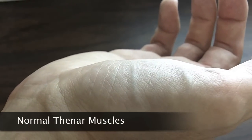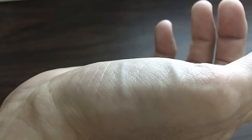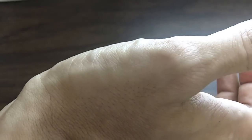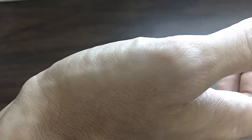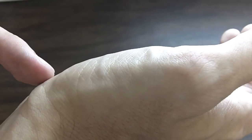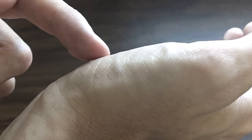This quick video shows you where the thenar muscles are on your hand and what atrophied thenar muscles look like. Carpal tunnel syndrome involves compression of the median nerve at the wrist level. This nerve supplies sensation on the thumb side of the hand but also supplies muscles at the base of the thumb.